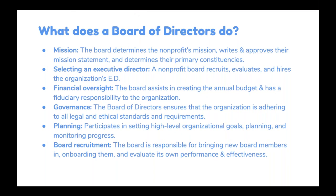The first thing we need to talk about is what exactly a board of directors does. There are really 10 important factors in what a board of directors does for a nonprofit, and some of them may surprise you, even if you sit on a nonprofit board. First, the board determines the nonprofit's mission, approves and often writes the mission statement, and determines what constituencies your nonprofit serves. This is really the primary function of the board — they are custodians of the high-level mission. They also recruit the executive director and are responsible for determining their compensation and evaluating their performance, though this is not really a boss-employee type of relationship.